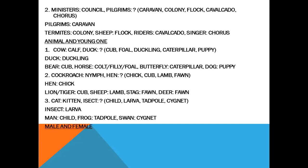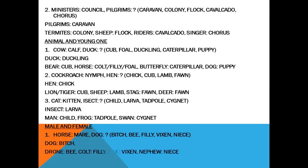Male and female. Horse — mare. Dog — what? Options: bitch, bee, filly, vixen, niece. Bitch is the female gender of dog. Drone — bee. Colt — filly. Fox — vixen. Nephew — niece.